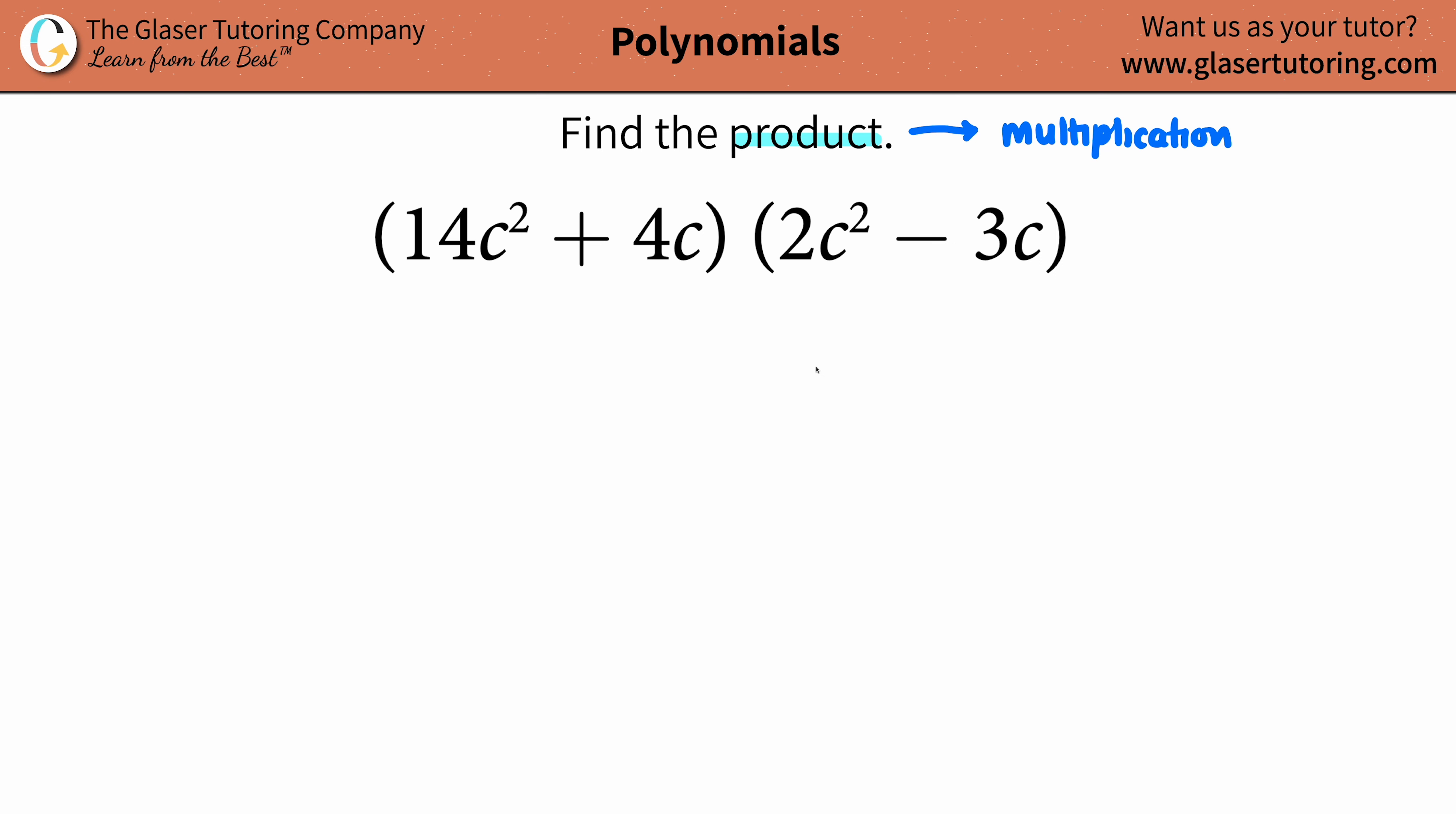We have this one parentheses with two things inside, and we must multiply it with another parentheses. All we're doing is the heavy lifting on the first parentheses. You put all your emphasis on the first parentheses and you just got to be fair.